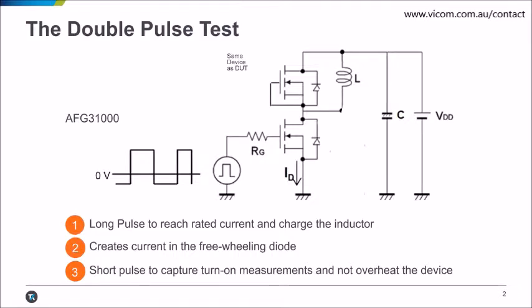The Tektronix AFG-31000 outputs pulses to turn on the MOSFET. The first step of the test is a long pulse that establishes current in the inductor. The second step turns off the low side MOSFET, creating a freewheeling current in the diode. The last pulse turns on the low side MOSFET again and allows measurements to be taken.